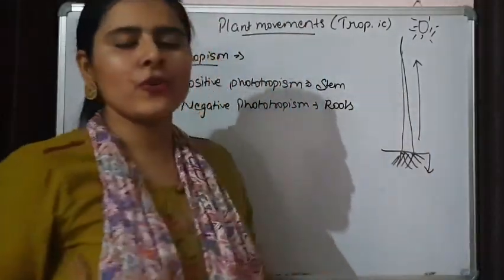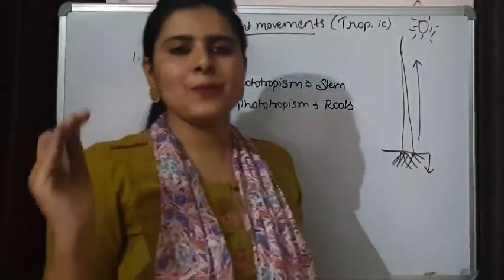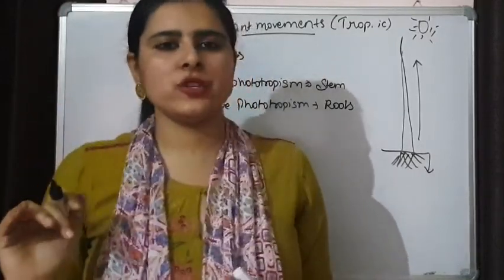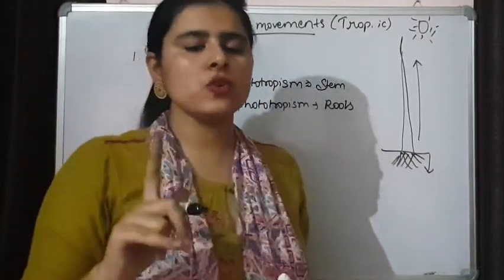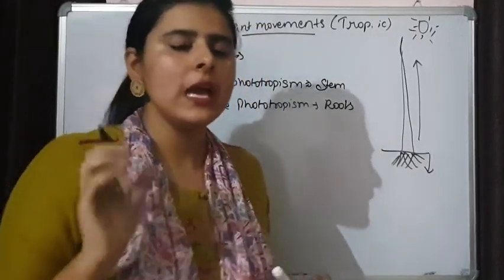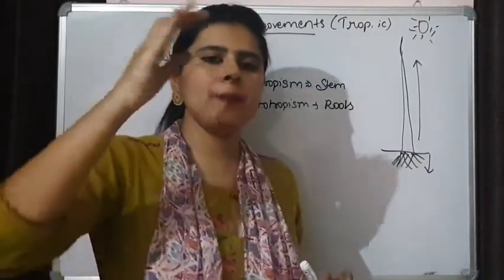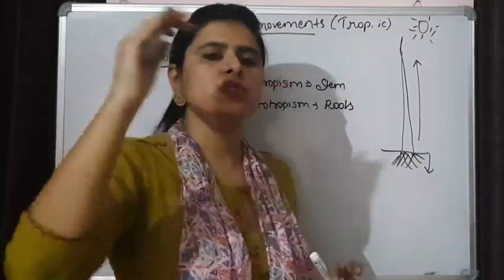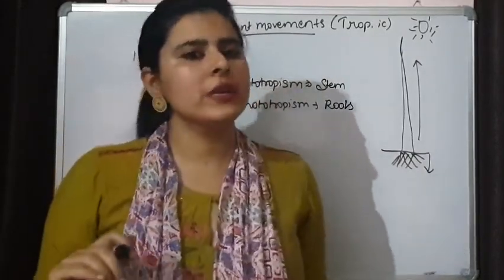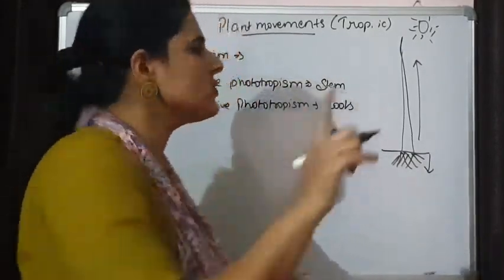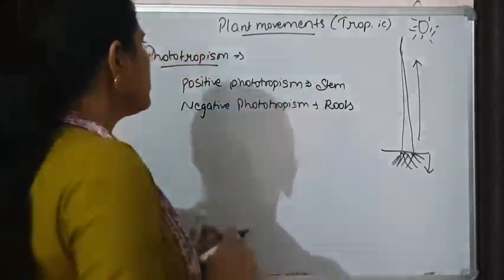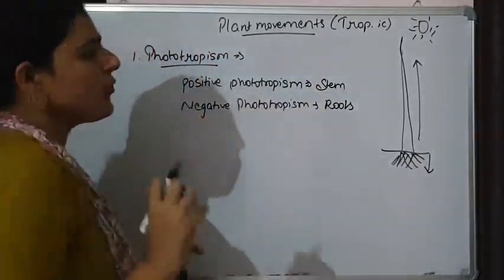One example of phototropism is the bending of a plant in the direction of sunlight, and that is caused because of a high concentration of auxin. We discussed how the shoot tip portion of the plant bends towards the direction of sunlight — that is also an example of positive phototropism. So this is phototropism.